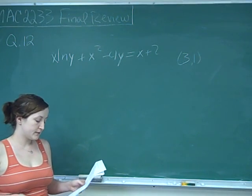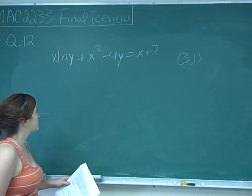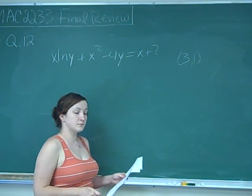This is question number 12 and it asks us to find the slope of the tangent line to the curve x ln y plus x squared minus 4y equals x plus 2 at the given point (3, 1).